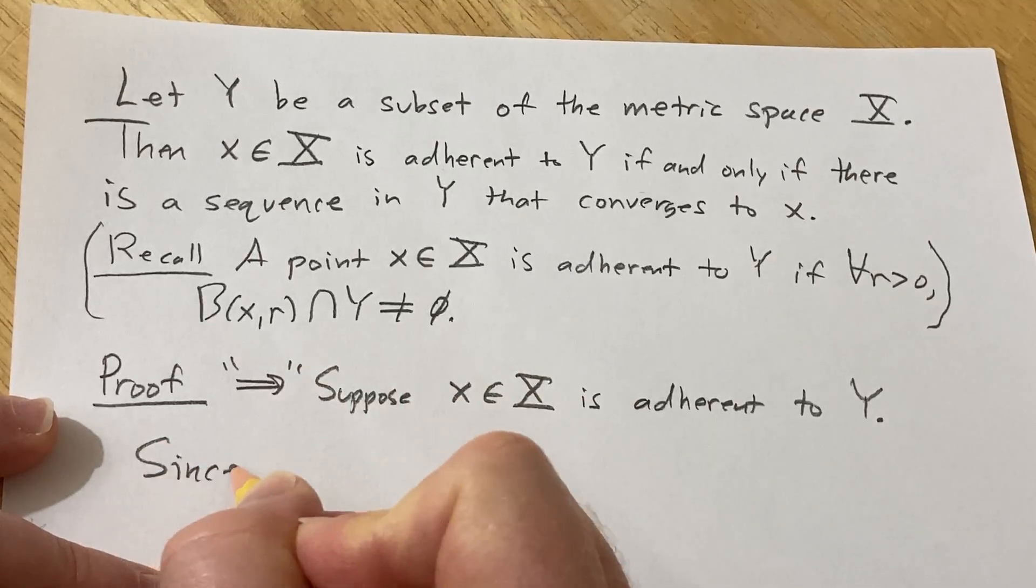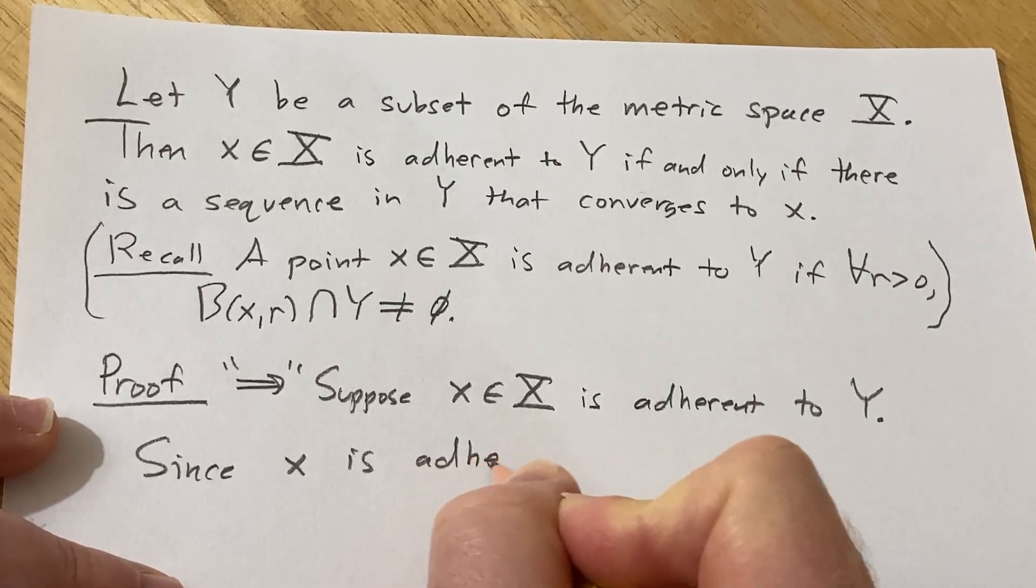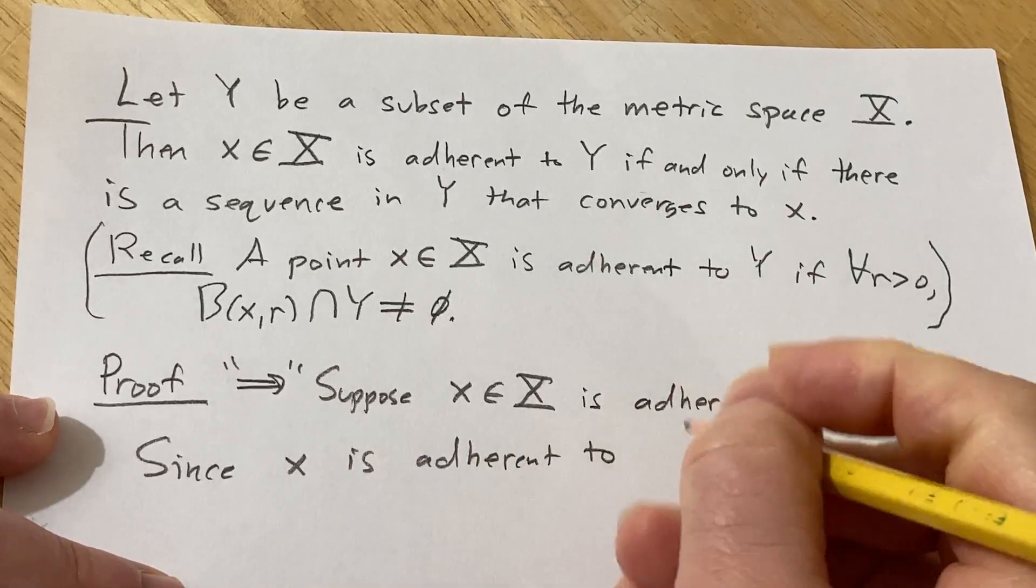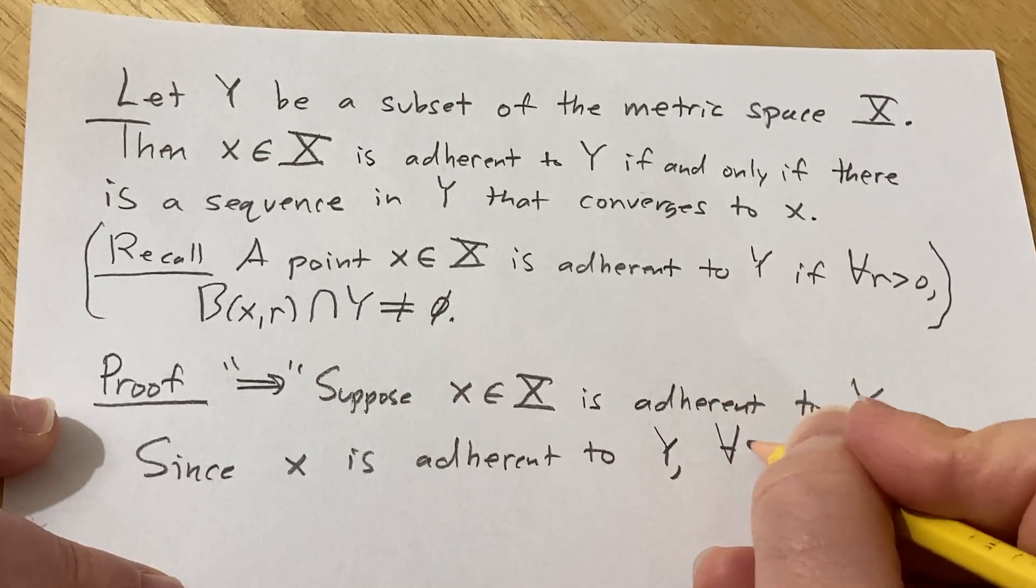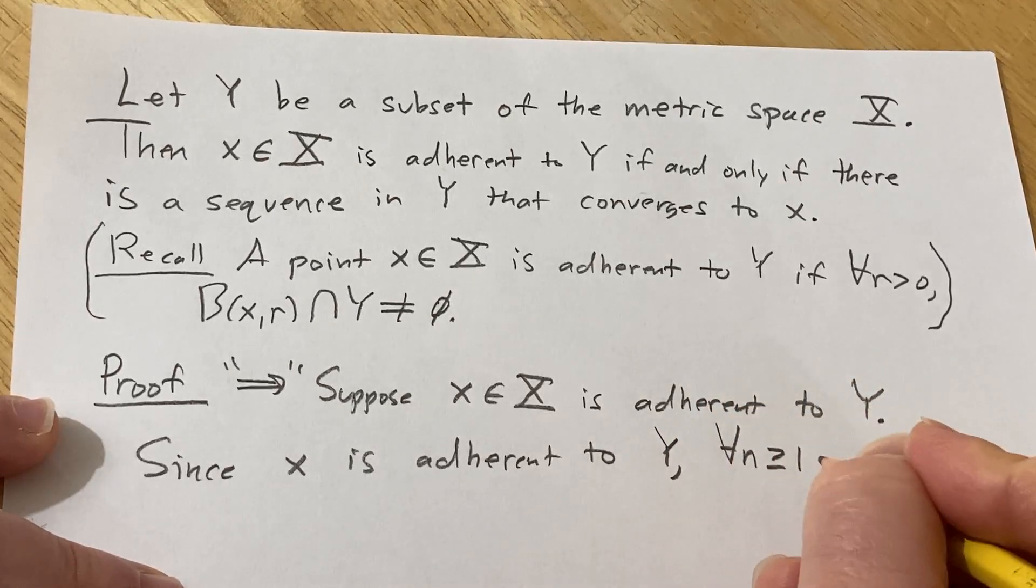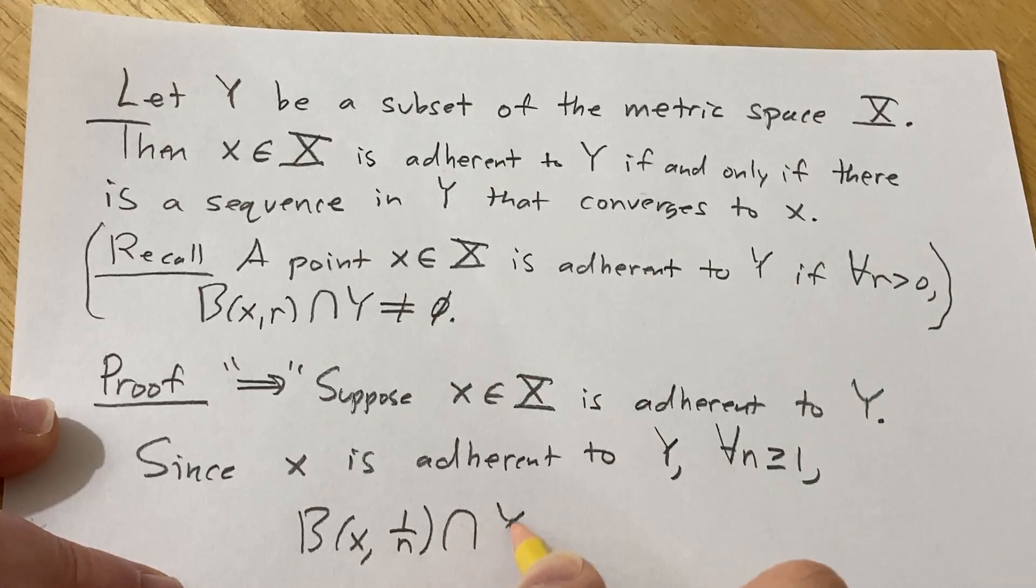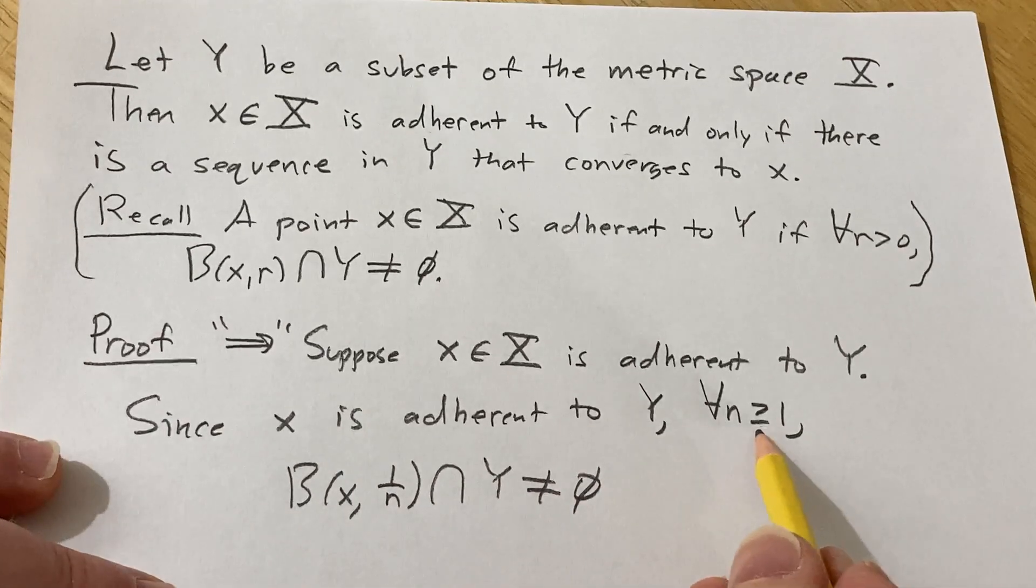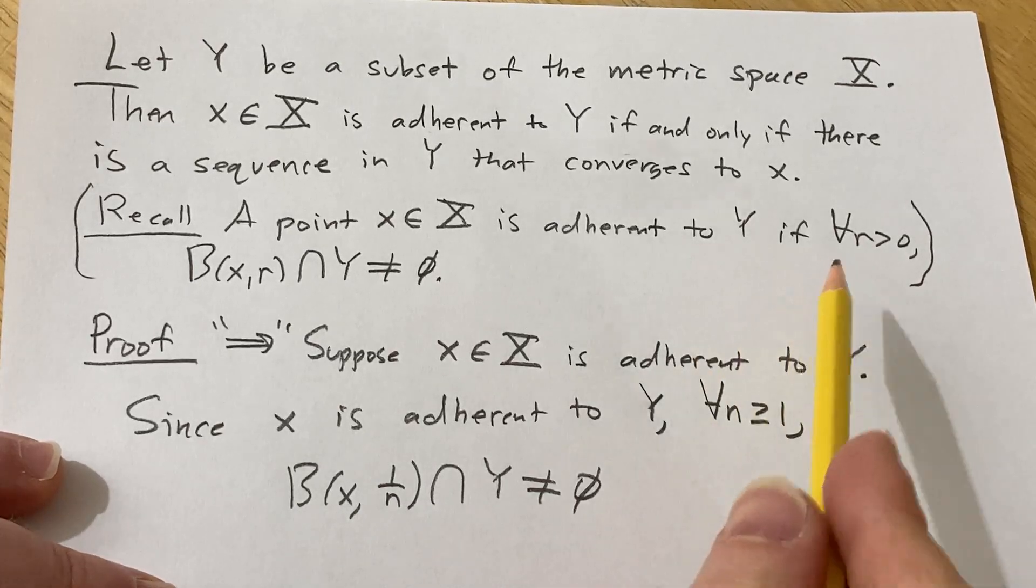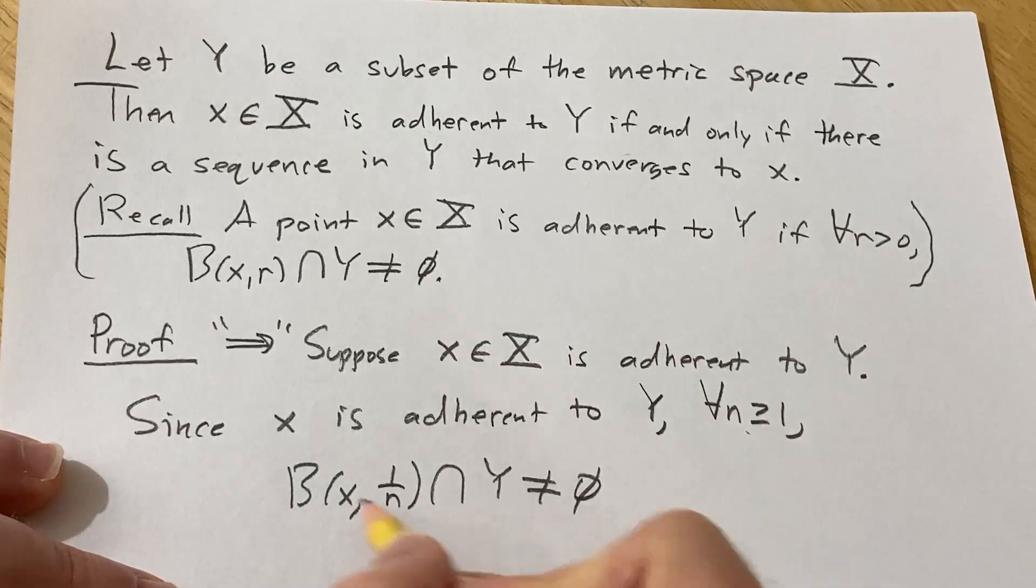So what I am thinking is we can do the following. So since x is adherent to Y, for all N greater than or equal to 1, we have that the open ball centered at x of radius 1 over N intersected with Y is not the empty set. So see how I did that? I used N instead of R because I want to create a sequence.